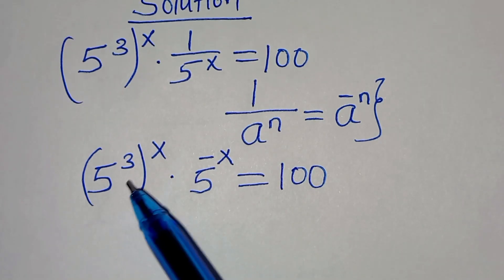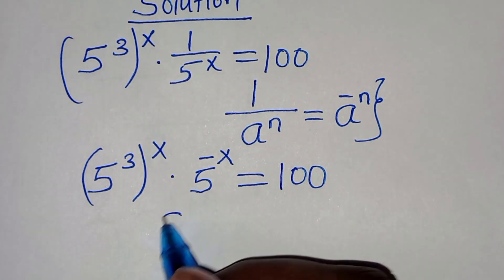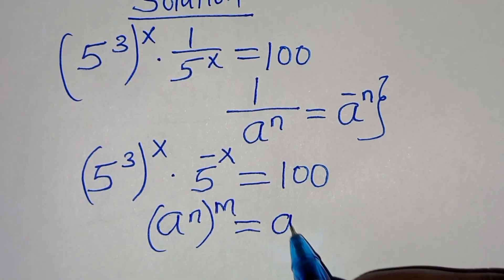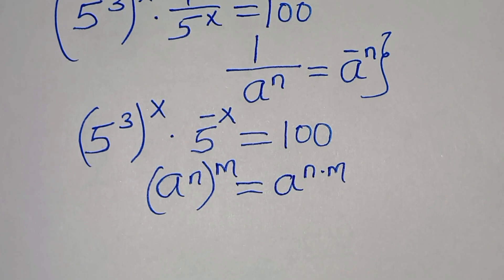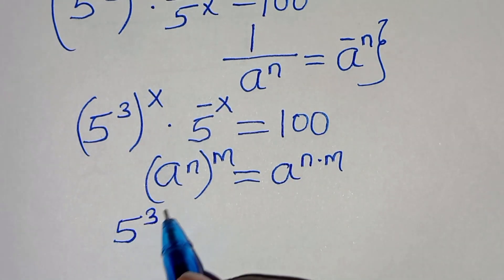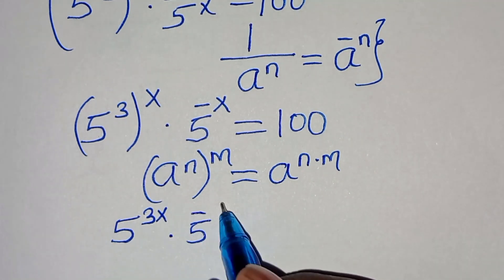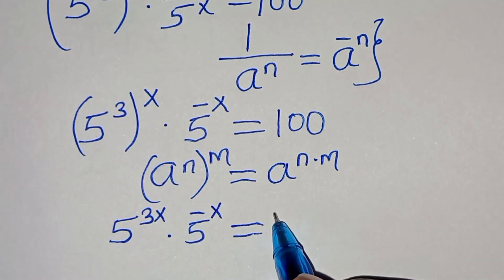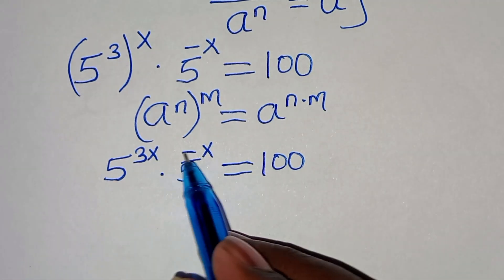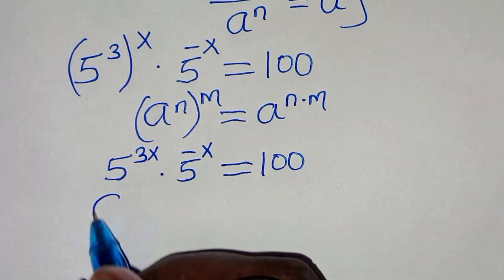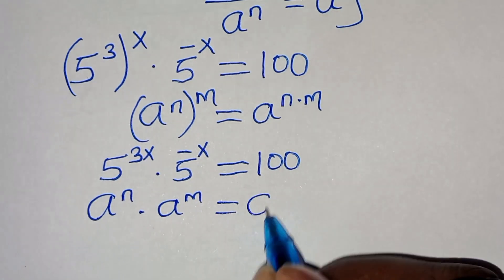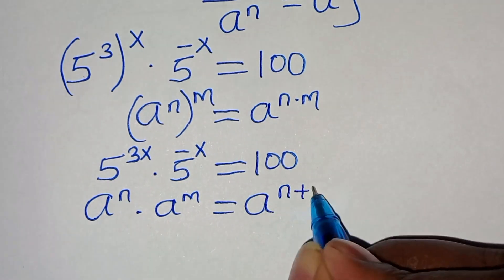Now 5 to the power of 3 to the power of x is in the form of a to the power of n raised to the power of m, which we can express as a to the power of n times m. We also have a to the power of n times a to the power of m, which we can express as a to the power of n plus m.